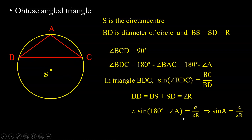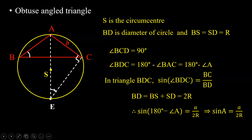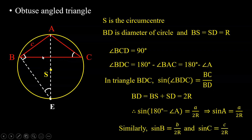Similarly, to find sin B, we draw a line through A and S meeting the circle at E. Triangle AEC is a right angle triangle, and angle ABC equals angle AEC as angles in the same segment. So sin B = opposite/hypotenuse = b/AE = b/2R. Similarly sin C = c/2R. Therefore in all three cases we have shown that a/sin A = b/sin B = c/sin C = 2R. This completes the proof of the sine rule. Thank you for watching, have a nice day.